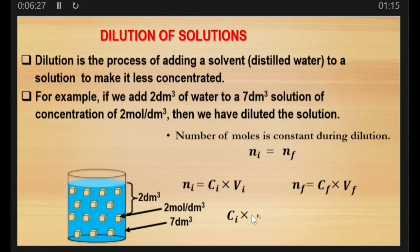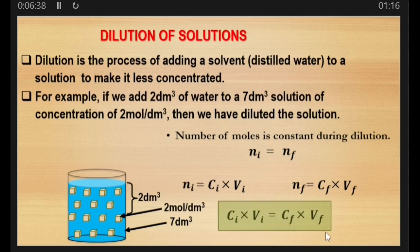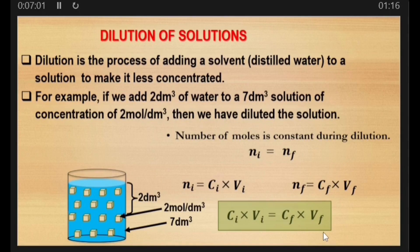Substituting both expressions, we get: C_i × V_i = C_f × V_f. This equation is the dilution equation, also called the dilution law. It can be used to calculate the final concentration after dilution, the final volume after dilution, the initial concentration before dilution, or the initial volume before dilution.